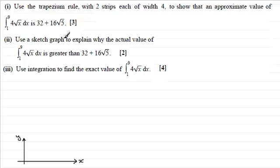It says use a sketch of the graph to explain why the actual value of this integral is greater than 32 plus 16√5. So what does the graph of y equals 4√x look like? Well it starts from the origin when x is 0, y would be 0, and then it's going to be part of a parabola on its side something like this.